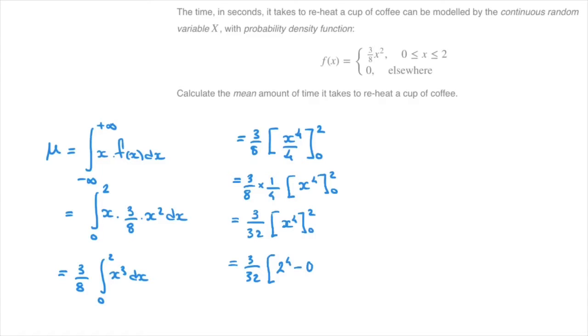This equals to three over 32 times two to the power of four minus zero to the power of four. And that's equal to three over 32 times in square brackets 16.